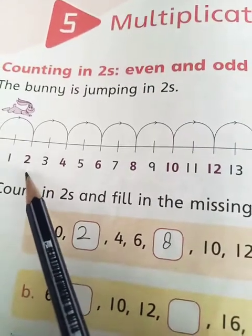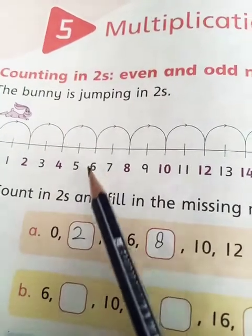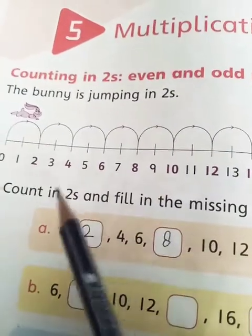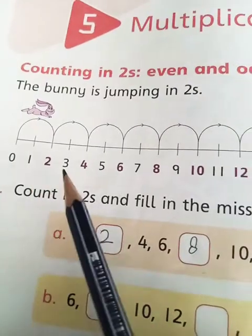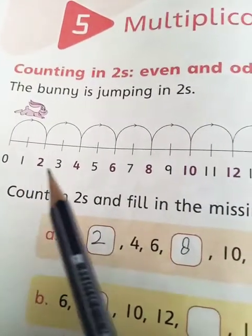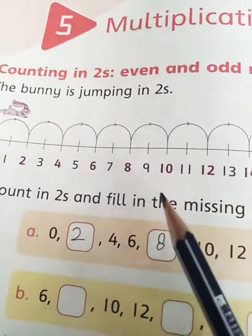So the numbers starting from 2 and the numbers which are got at the jumping of 2s, those numbers are called the even numbers. While the numbers which we have skipped in this number line like 1, 3, 5, 7, 9, these are the odd numbers. Okay?